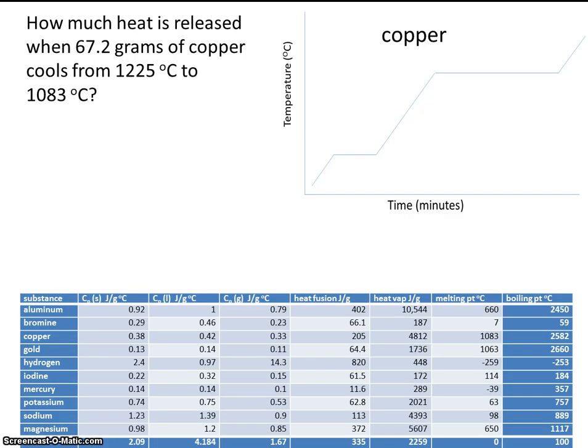Now here's a table which has a list of specific heat capacities for a variety of different substances. C is specific heat capacity, and then S is solid. So this is the specific heat capacity for solid, liquid, and gas.